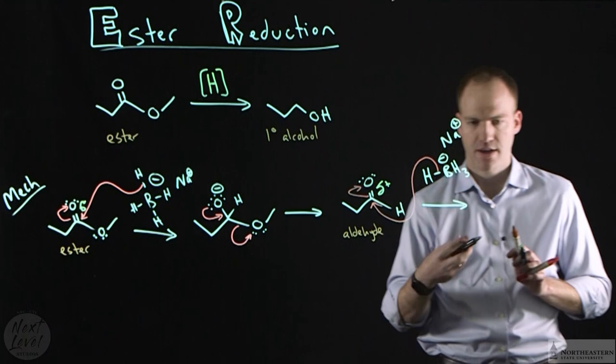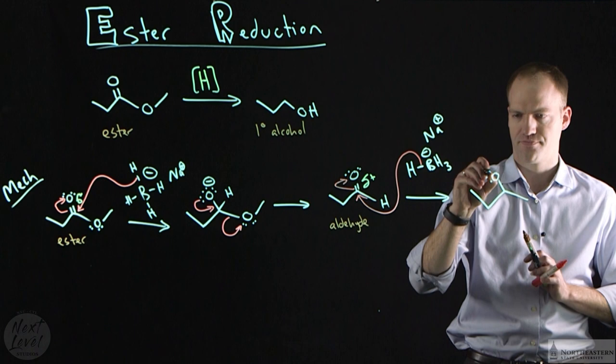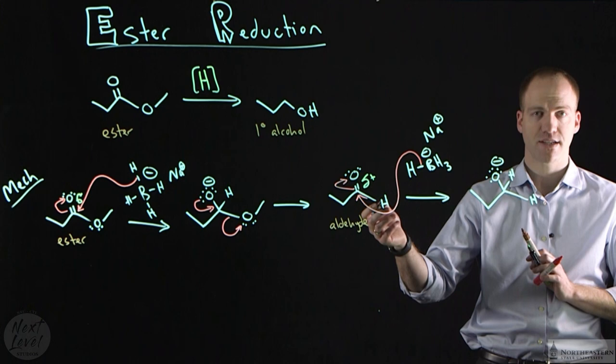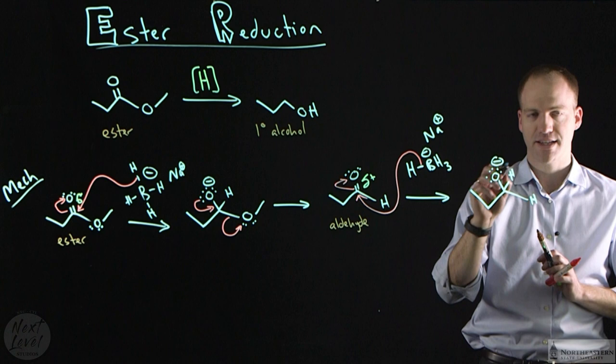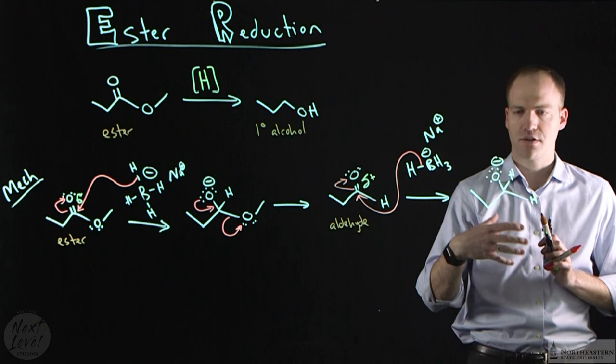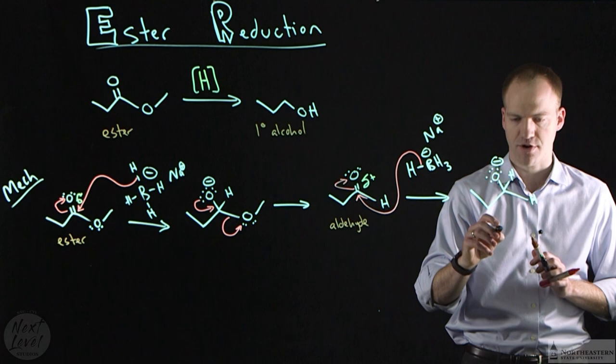This will give us another tetrahedral intermediate. This hydrogen was present from the first hydride attack. This hydrogen is present from the first hydride attack. This hydrogen is present from the second hydride attack. And our final step here now, we need to work this reaction up by giving this oxygen a proton.